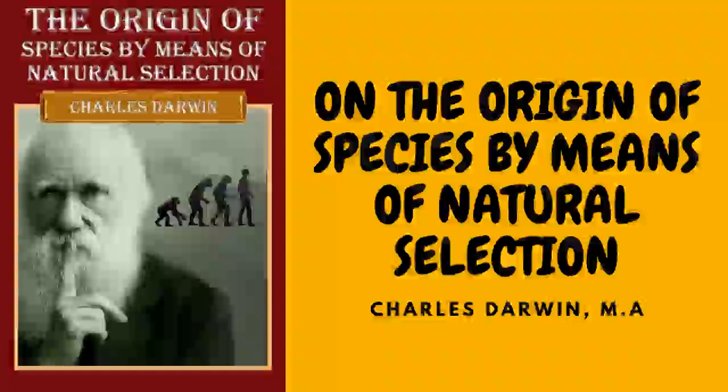May not those naturalists who, knowing far less of the laws of inheritance than does the breeder, and knowing no more than he does of the intermediate links in the long lines of descent, yet admit that many of our domestic races have descended from the same parents — may they not learn a lesson of caution when they deride the idea of species in a state of nature being lineal descendants of other species?